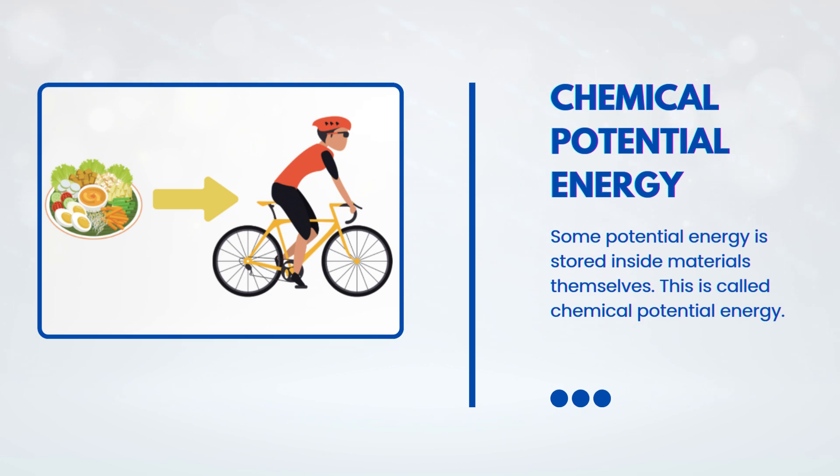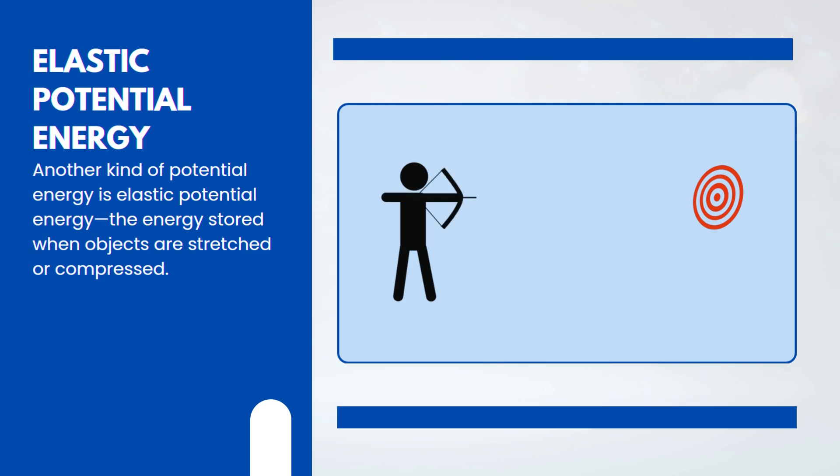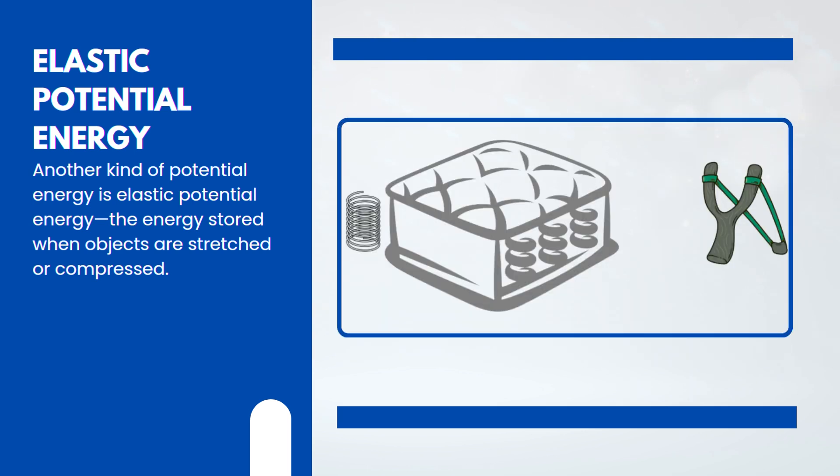Potential energy can also come from stretching or compressing objects. Another kind of potential energy is elastic potential energy, the energy stored when objects are stretched or compressed. A stretched bowstring on an archery bow is a great example. The farther it's pulled back, the more energy it stores.